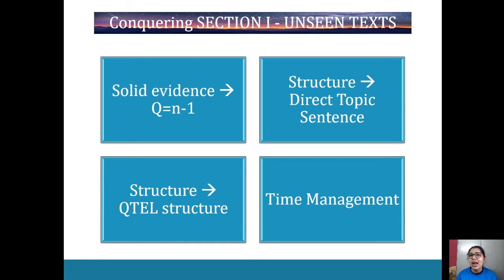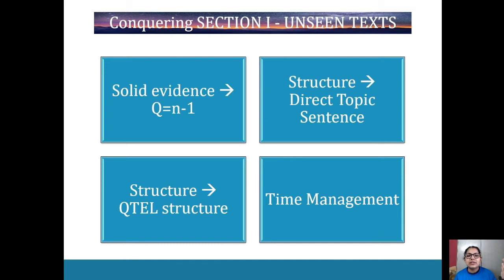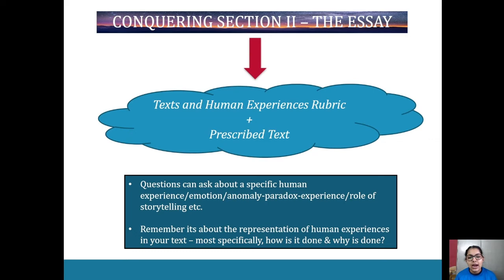Time management is super important. The first time you do it you end up spending a lot more time than you should on a three-marker — that's why practice matters. For Section 1, aim to finish in 40 minutes instead of 45. That gives you about two minutes per mark. So for a three-marker, aim to spend about six — at most seven — minutes, finish it, and move on. That's the unseen text section covered.